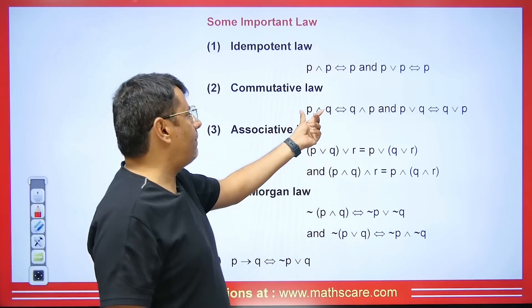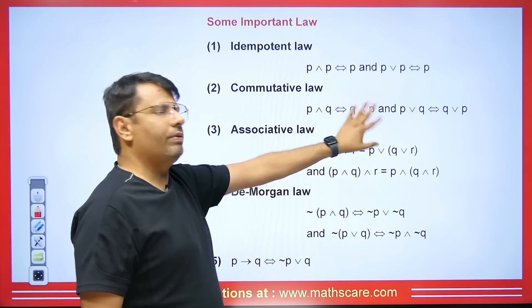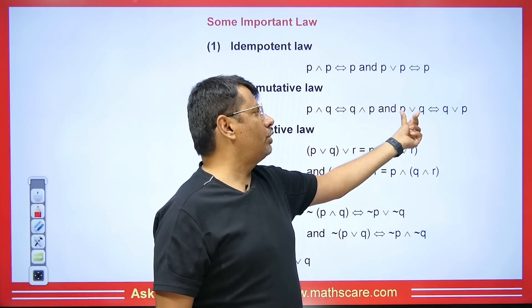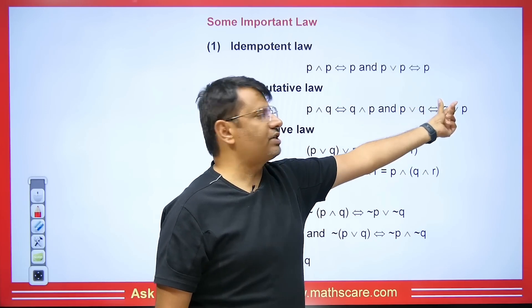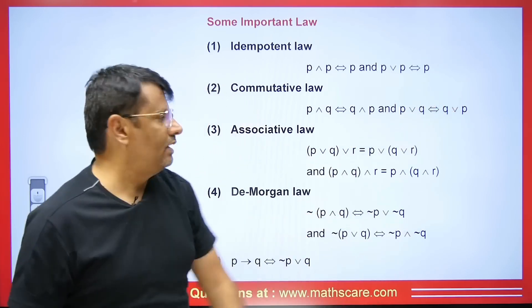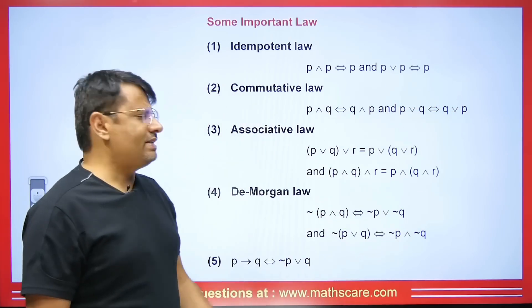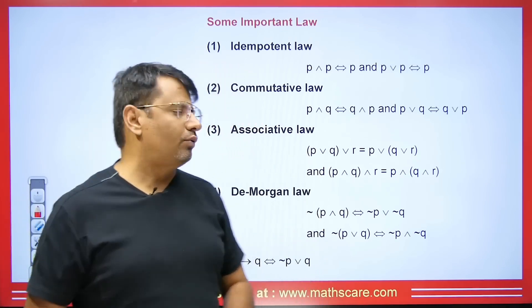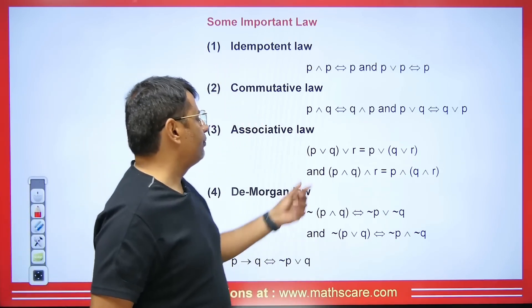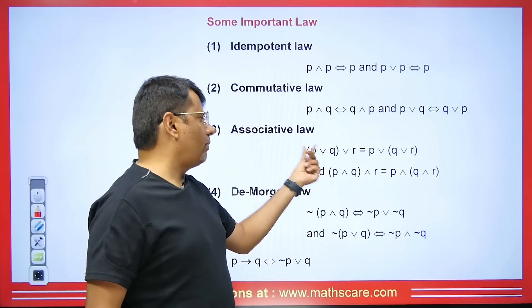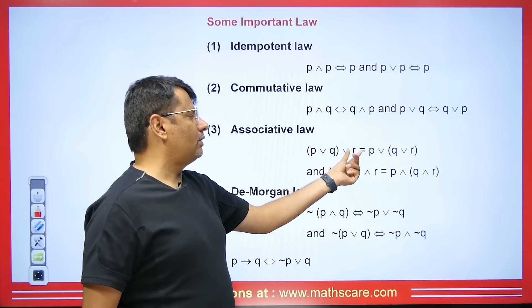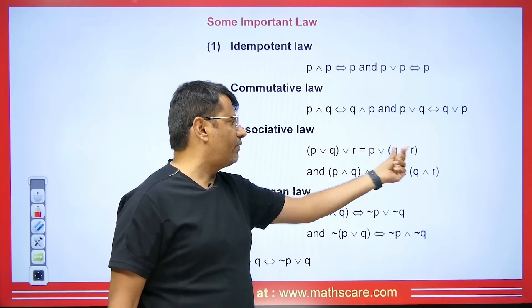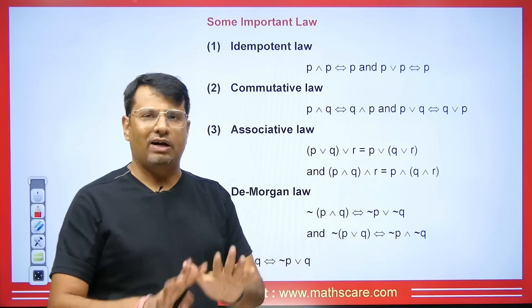The commutative law means the value of p AND q equals q AND p — both are the same. If we have OR, then p OR q is always equal to q OR p. Similarly, there is the associative law, which we use in multiplication and addition. For OR: p OR q OR r — calculating the first two then the third, or the last two first, gives the same result. This is also equal for AND.